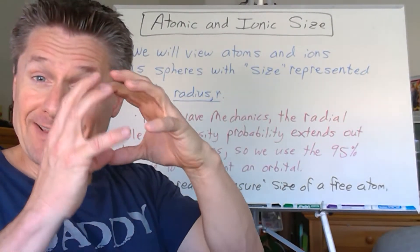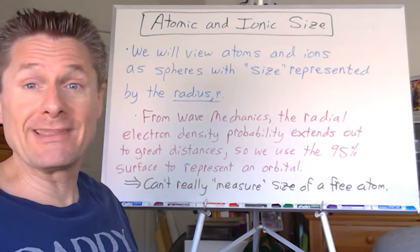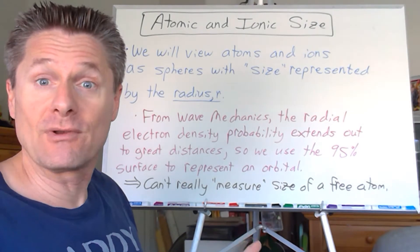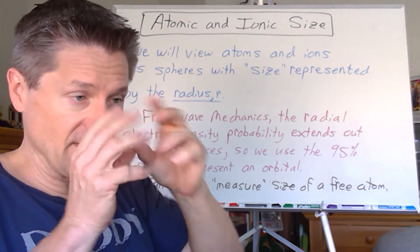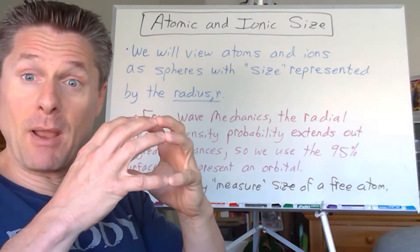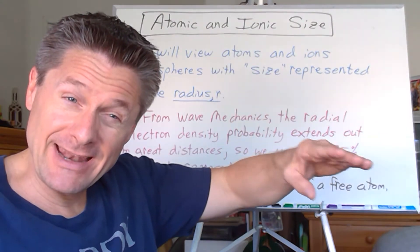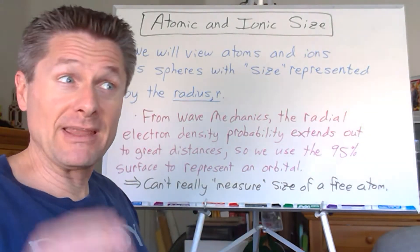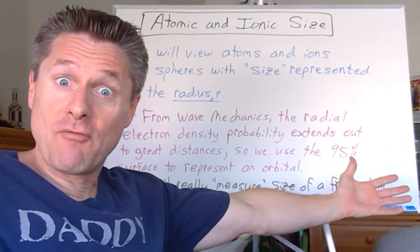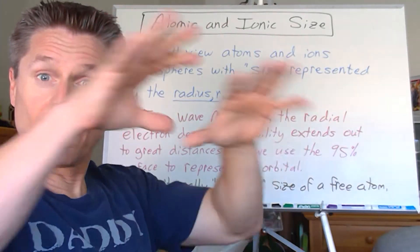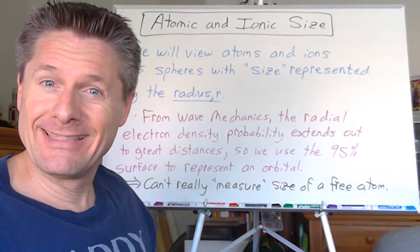We're going to picture atoms and ions as spheres — spherical electron density. We can use the diameter or radius to determine the size of that sphere. Chemists typically use the radius R, half the diameter. But there's a problem: from wave mechanics, the radial probability density never quite fades to zero — you get a peak and then it tails off. That electron probability technically extends to infinity. So how do you measure the size of a free atom if the electron density spreads out so far? We draw a 95% containment curve to represent an orbital, but it's hard to define where an atom ends.